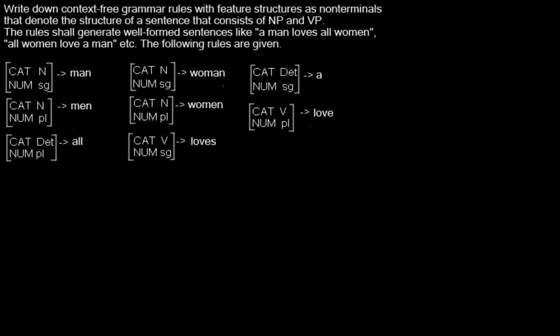We have the following task given: Write down context-free grammar rules with feature structures as non-terminals that denote the structure of a sentence that consists of NP and VP. So what does it mean?